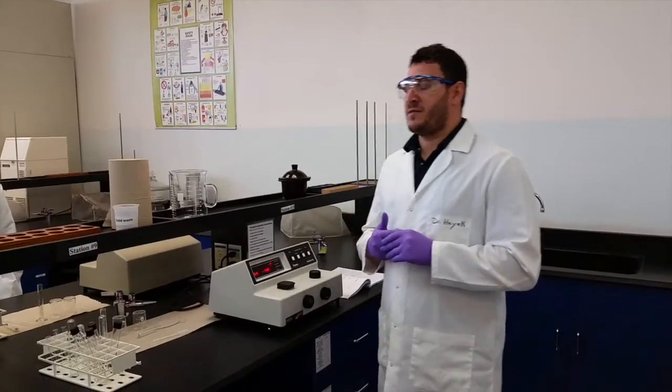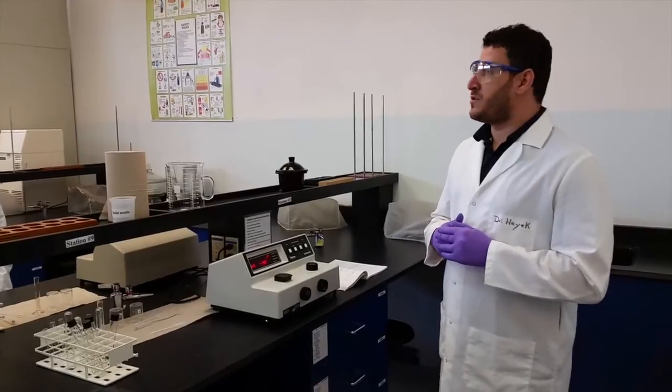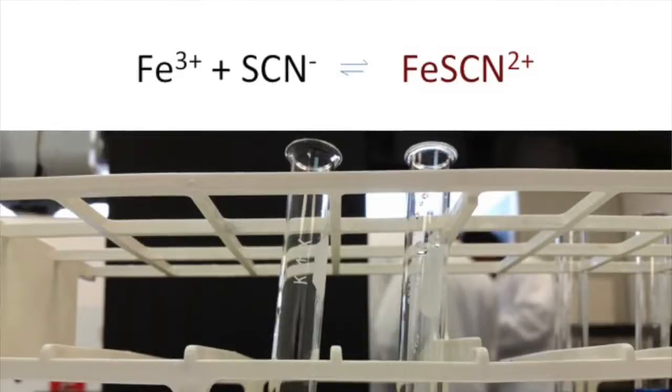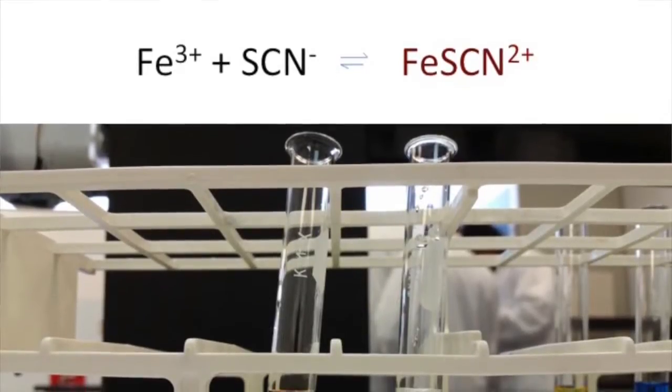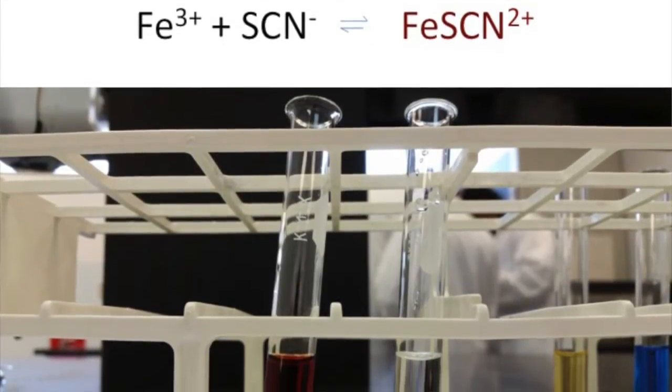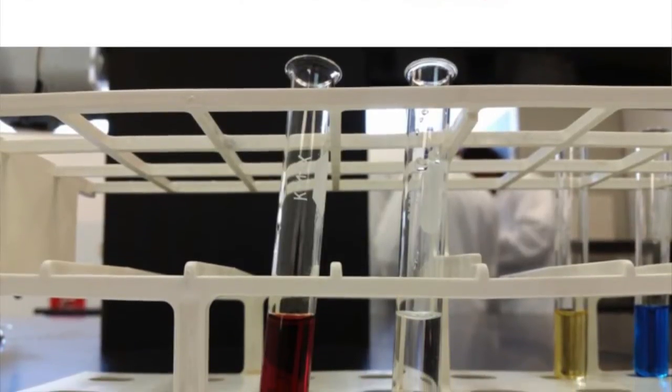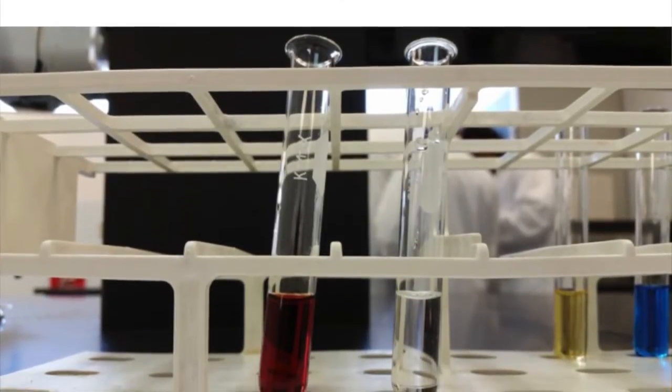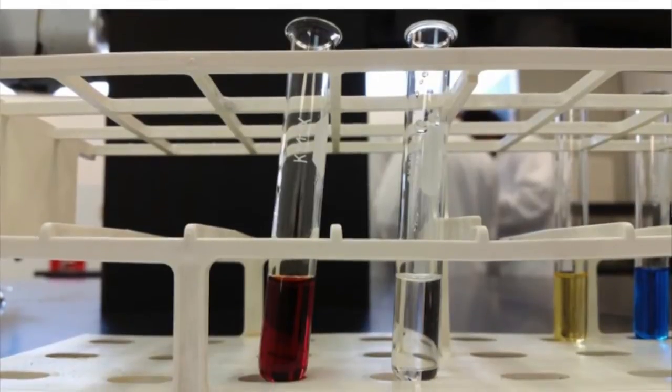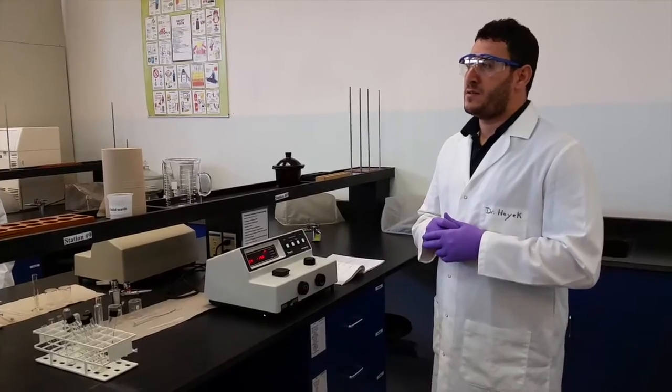You are familiar with this reaction because you've done it in Investigation 13 last week. You mixed iron 3 plus with thiocyanate and obtained the dark brown color, which was the iron thiocyanate complex ion, Fe(SCN)2+.